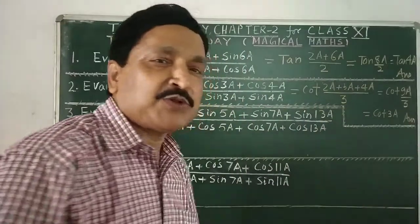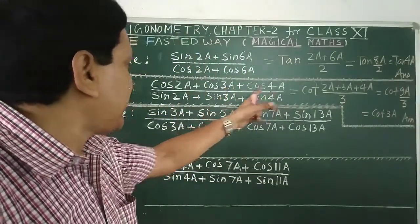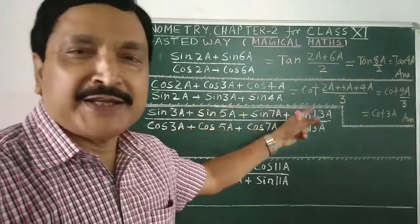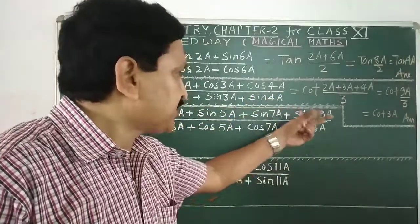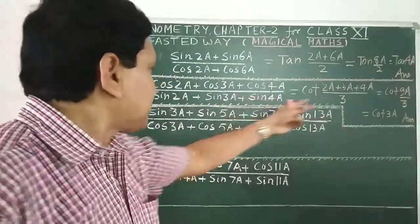So within a few seconds. Only you can answer the question. 2A plus 3A plus 4A. 5A plus 4A. 9A. 9A by 3A. So the answer is cos by sin is cot.